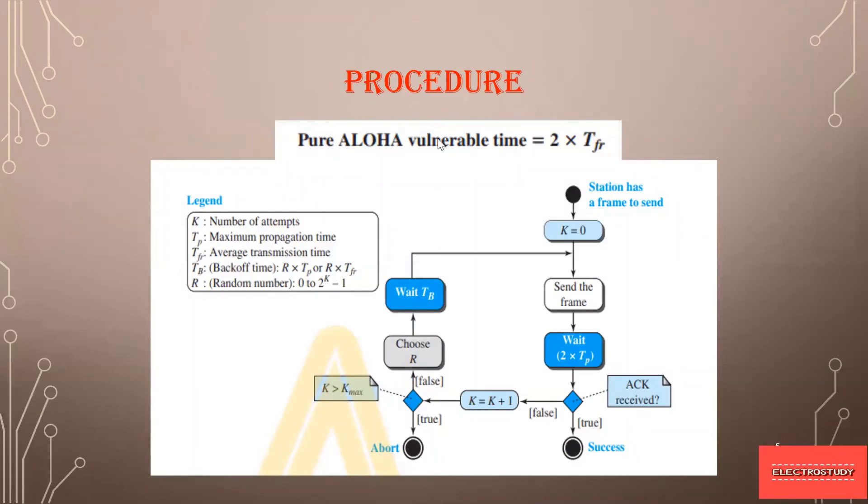With this flow, you can tell that the vulnerable time of pure aloha is 2 into T of FR. Vulnerable time is nothing but the length of the time a frame is taking for colliding with each other. That is 2 into TFR is time taken for producing a frame - twice the time taken for producing the frame. Now next you can see how slotted aloha is behaving.